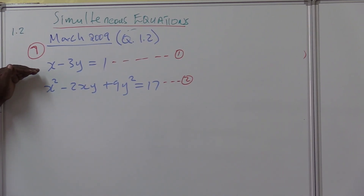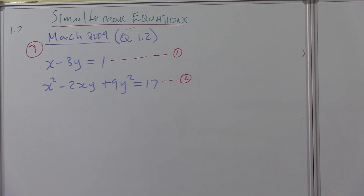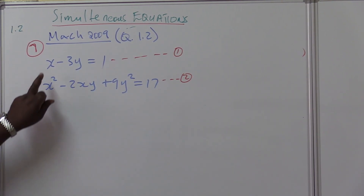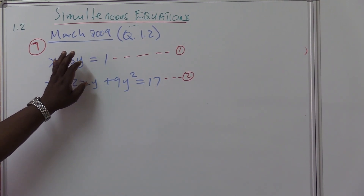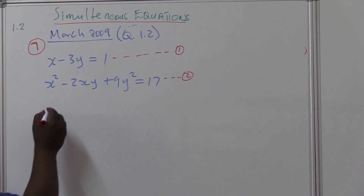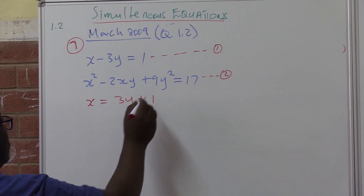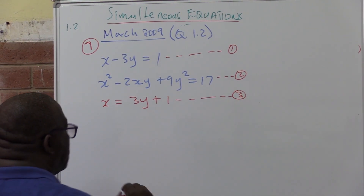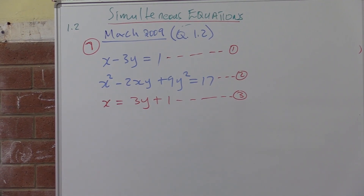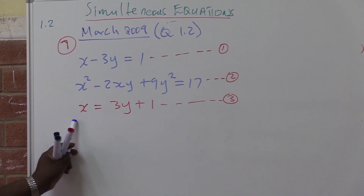I suggest going to the simpler equation. This one looks complicated, so we use the first one to create the third equation. We're trying to get rid of one variable — check which one is easier to eliminate. Making x the subject is easier here. So x is equals to three y plus one. That's our third equation — x is equal to something, which is exactly what we wanted.